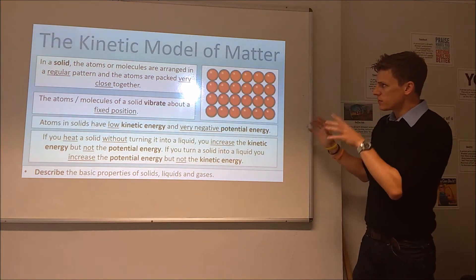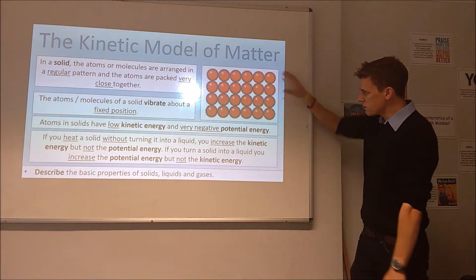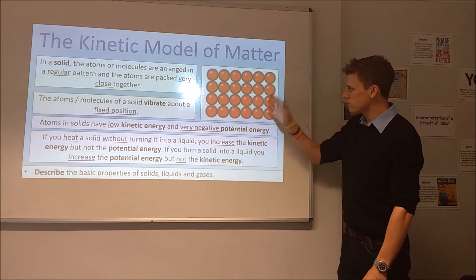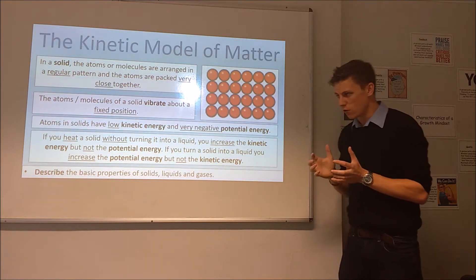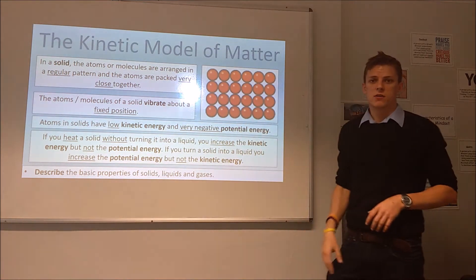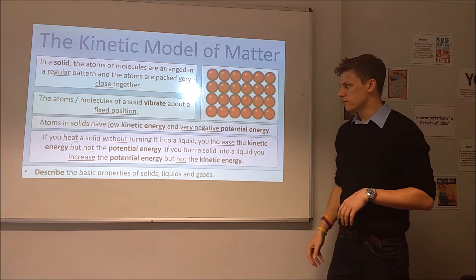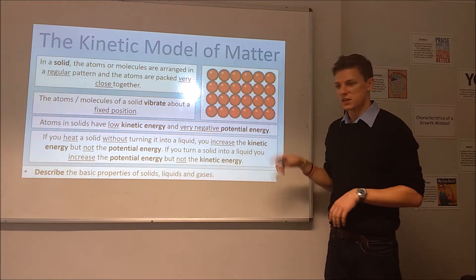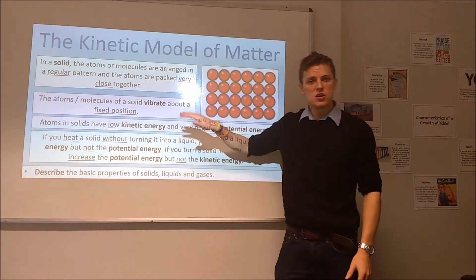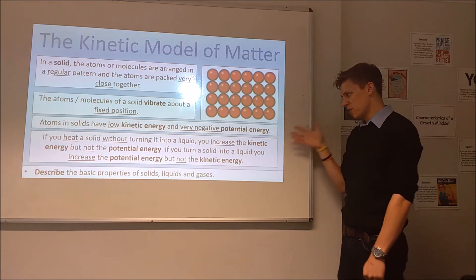In terms of the kinetic model of matter, let's first look at a solid. We've got a diagram of roughly what a solid looks like — a nice, closely packed arrangement of the molecules or atoms, in a very regular system of packing. These are not stationary; nothing is ever actually stationary regardless of how cold you make it. These will always be vibrating, but they vibrate about the same position so they don't move relative to one another. Because they're not really moving around, just vibrating, they have very low kinetic energy, and because they're closely packed together, they have very negative potential energy.